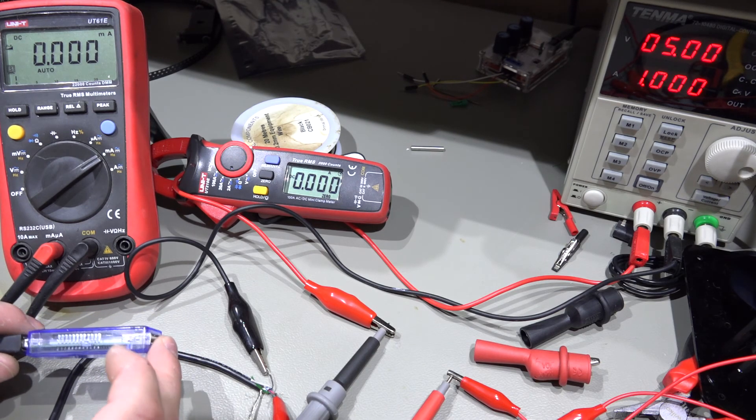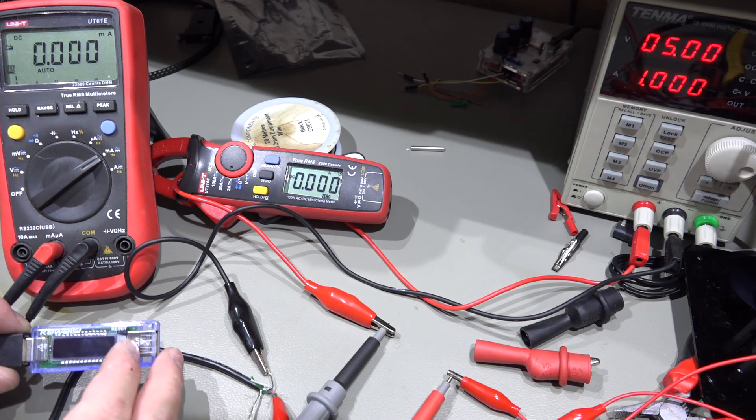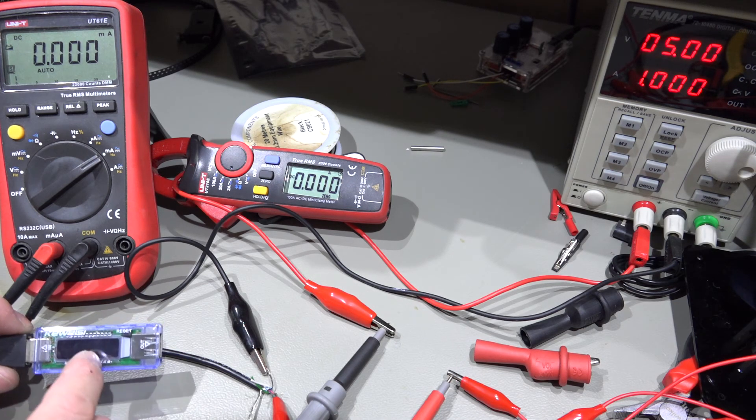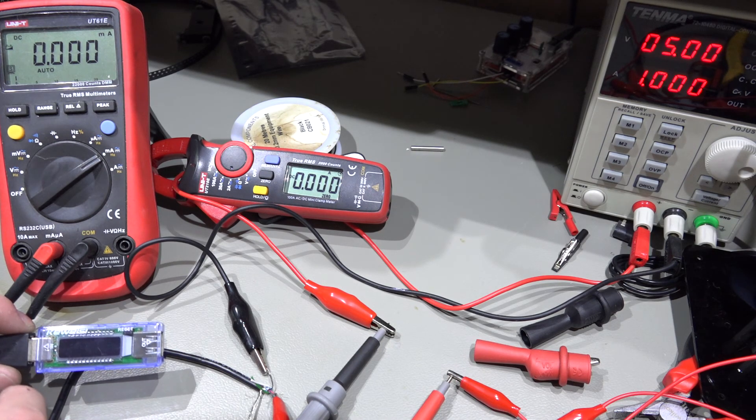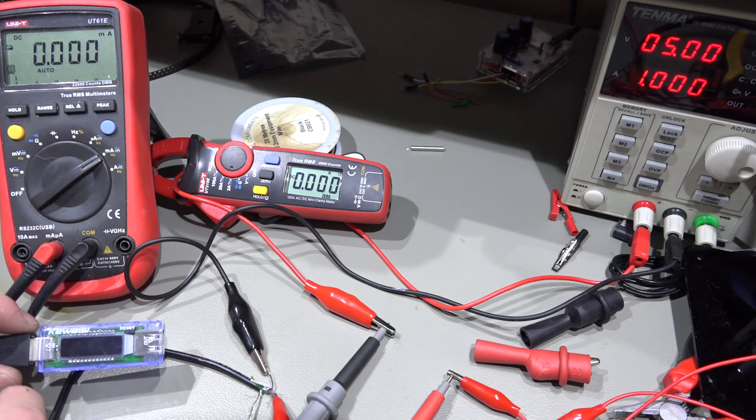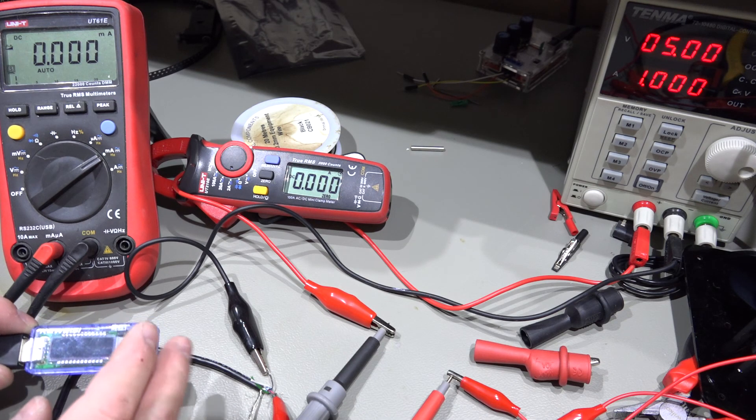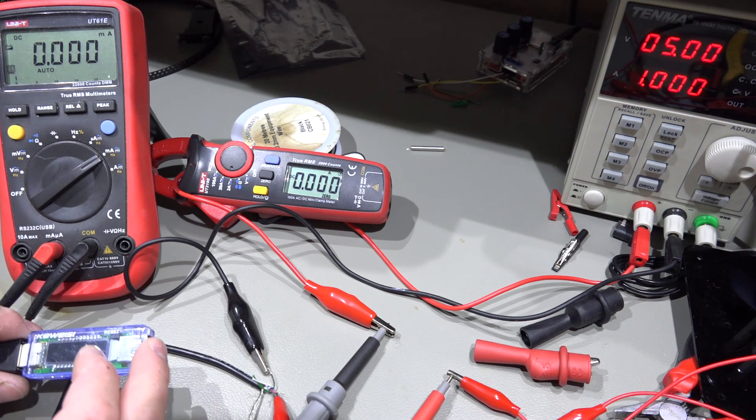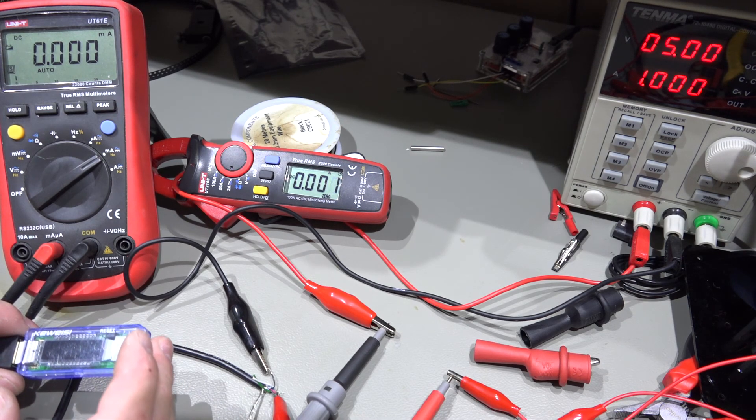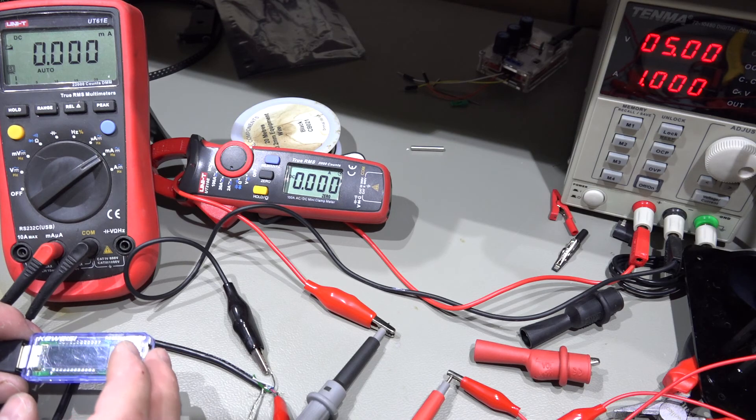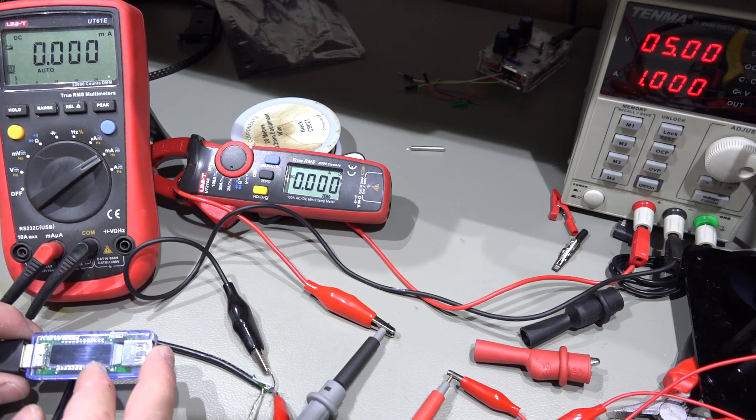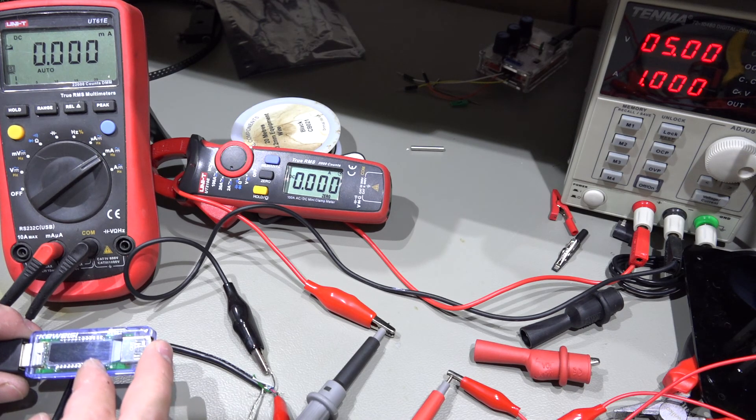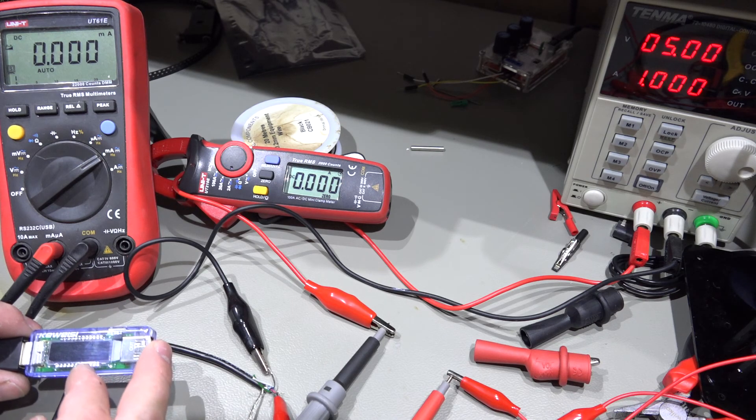Somebody left a comment on my video asking how reliably does it measure current across the different voltage ranges. Now this is primarily a USB device, designed for plugging in to something and then plugging your phone in to check that you're getting the required voltage and current.